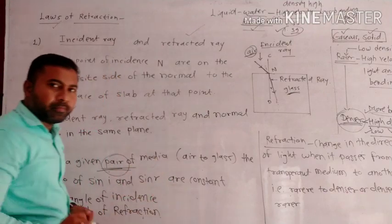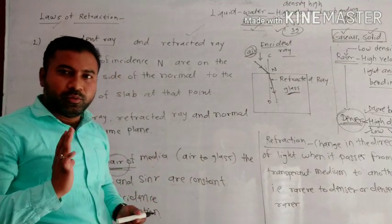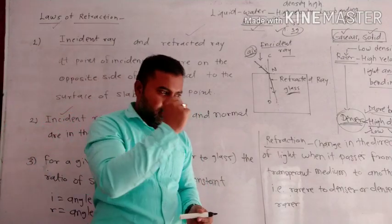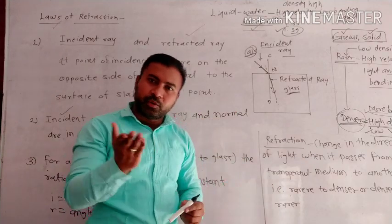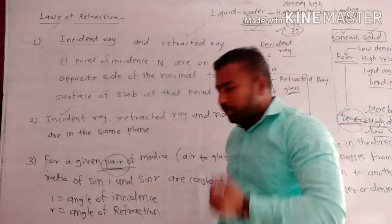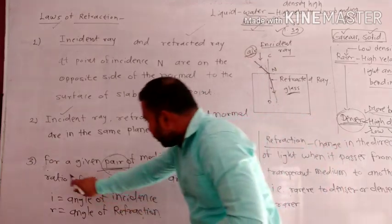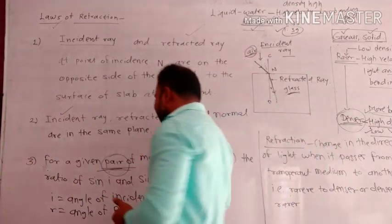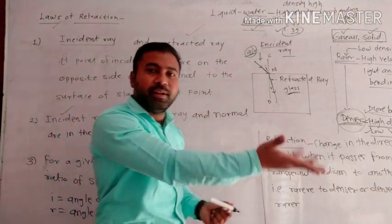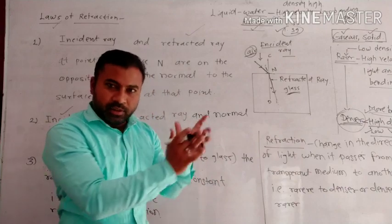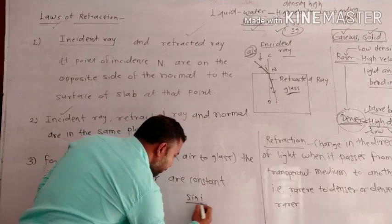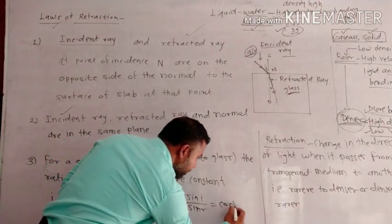For a given pair of media — such as air and water, kerosene, turpentine oil, glass, hot air, or cold air — we take two media at a time. For example, air to diamond. The sine of the angle of incidence, that is sine i, divided by sine r, for a given pair of media is constant.